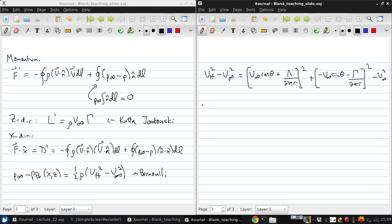And so if we work this out, V far field squared minus V infinity squared is equal to 2 V infinity lambda over 2 pi r cos theta plus 2 V infinity circulation over 2 pi r sin theta plus lambda squared plus circulation squared over 2 pi r squared.